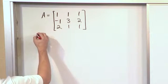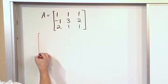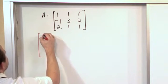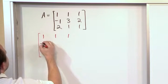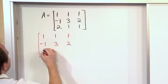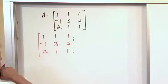And the way you do it is you set it up as follows. You set up an augmented matrix. You write the matrix that you're given on the left: 1, 1, 1, negative 1, 3, 2, 2, 1, 1. You put your dotted line here.